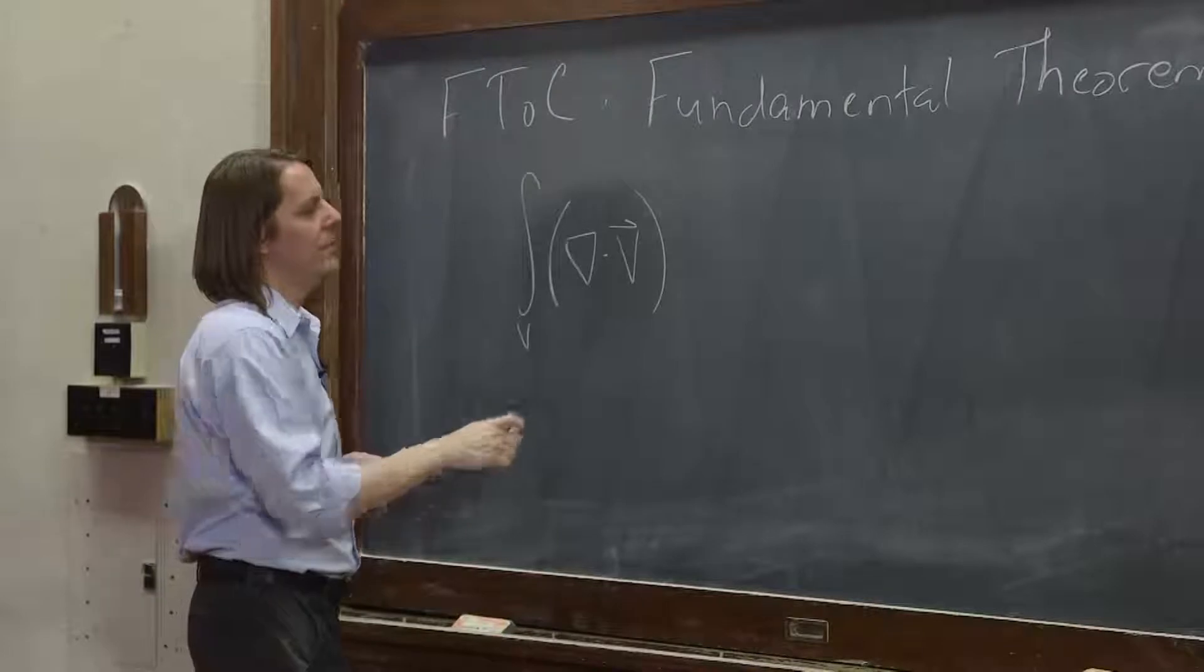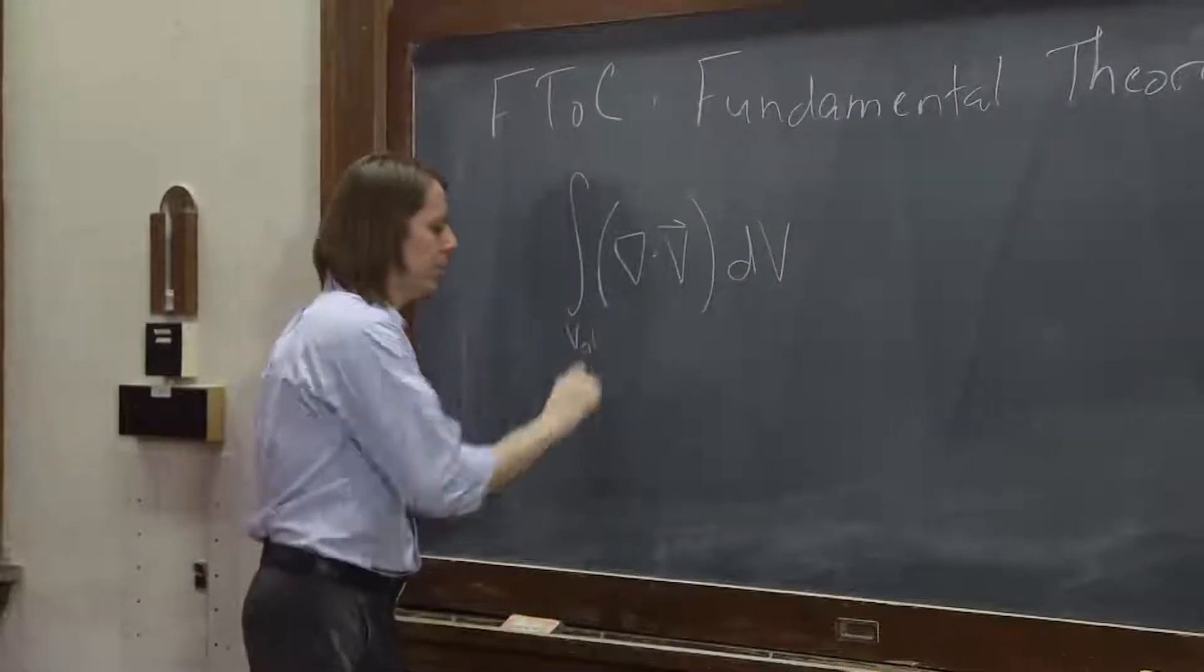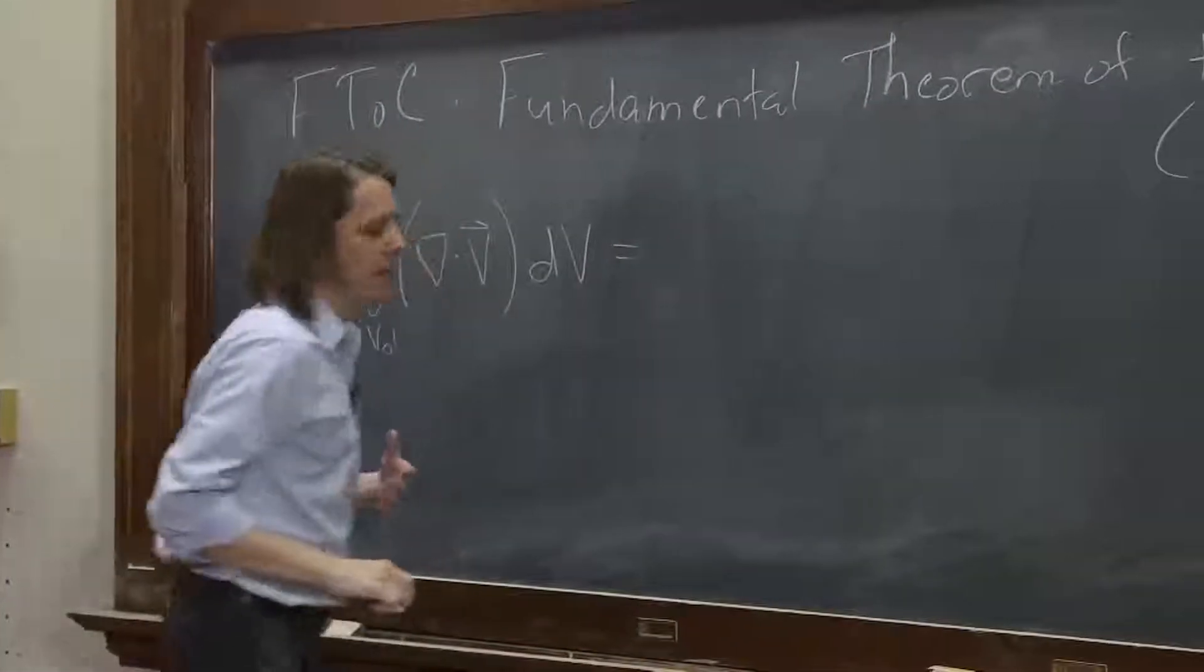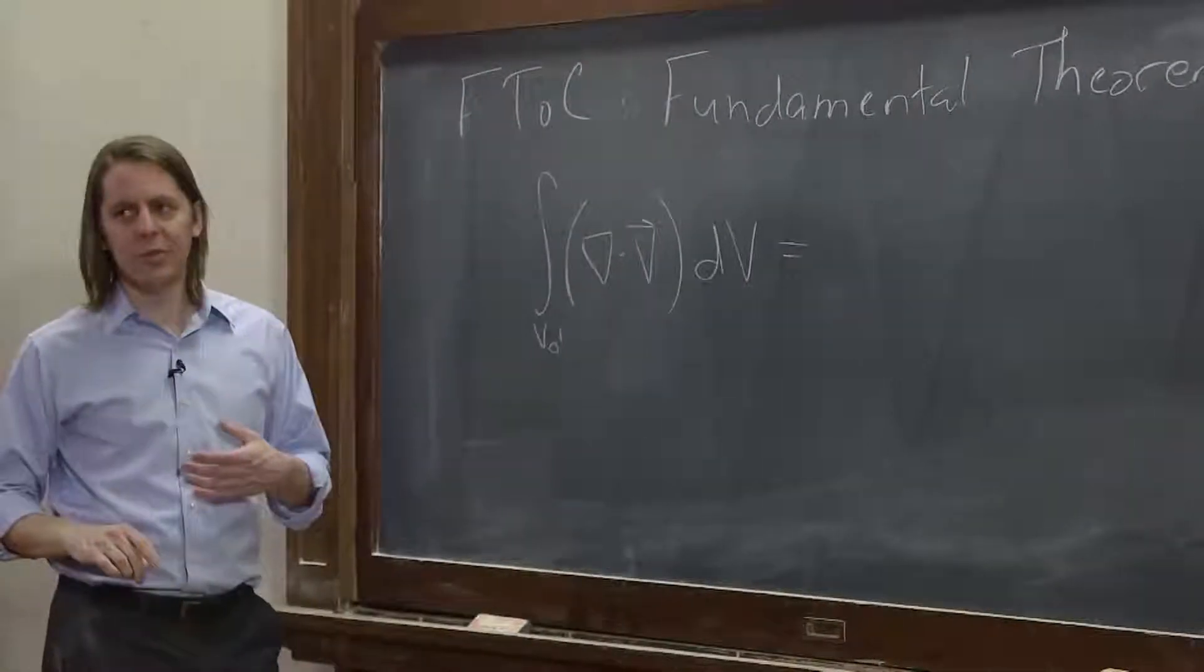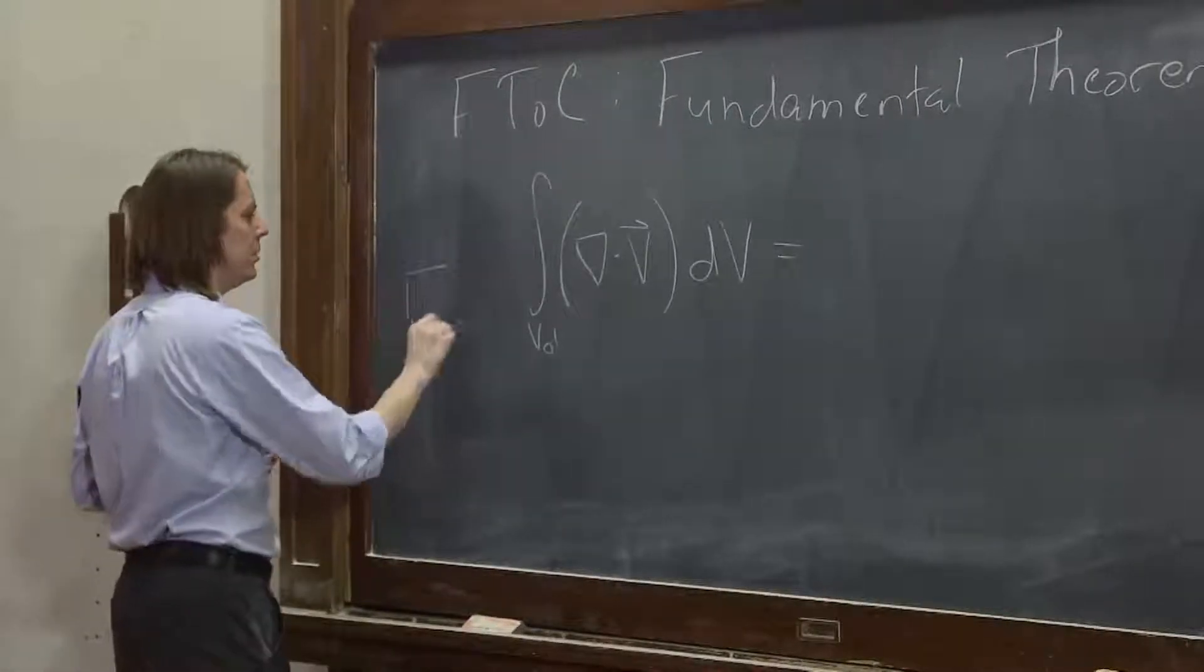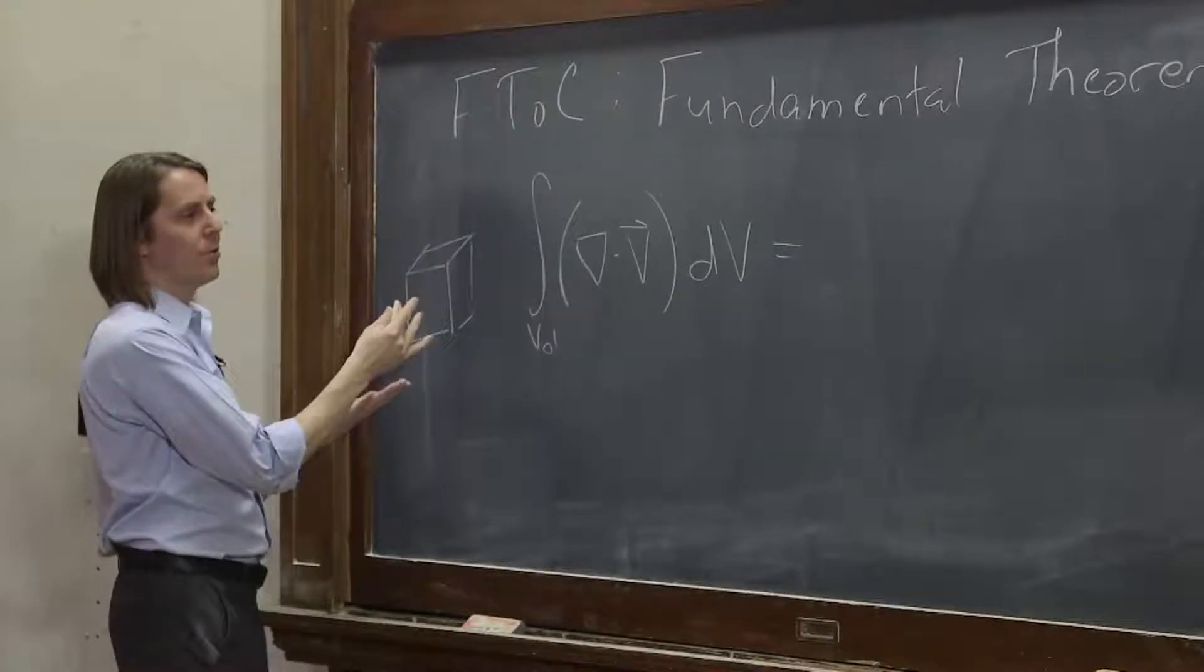So this scalar, del dot v, times just dV, doing a volume integral, is related to the values of that field at the boundary. So if we're doing a volume integral, we're thinking about the divergence inside, the boundary is a surface integral.